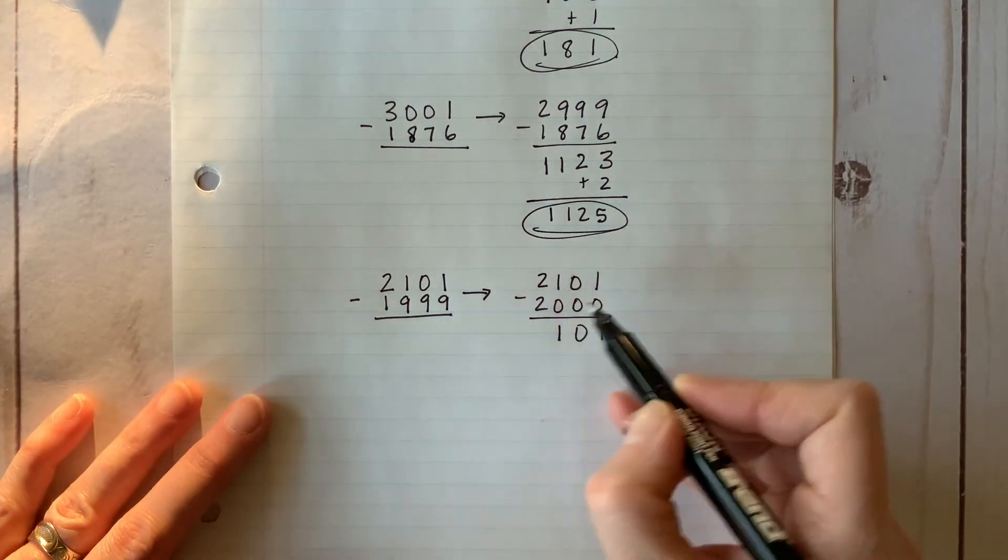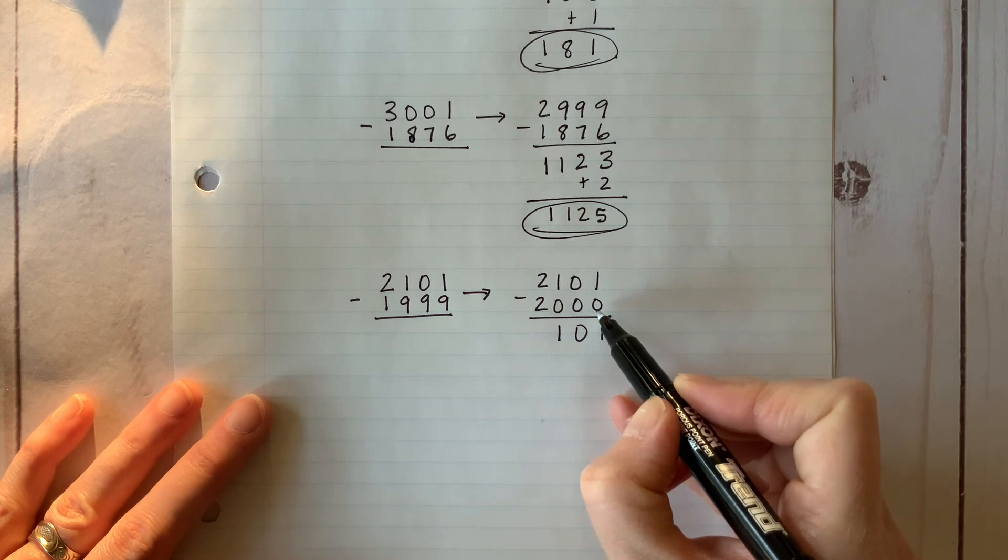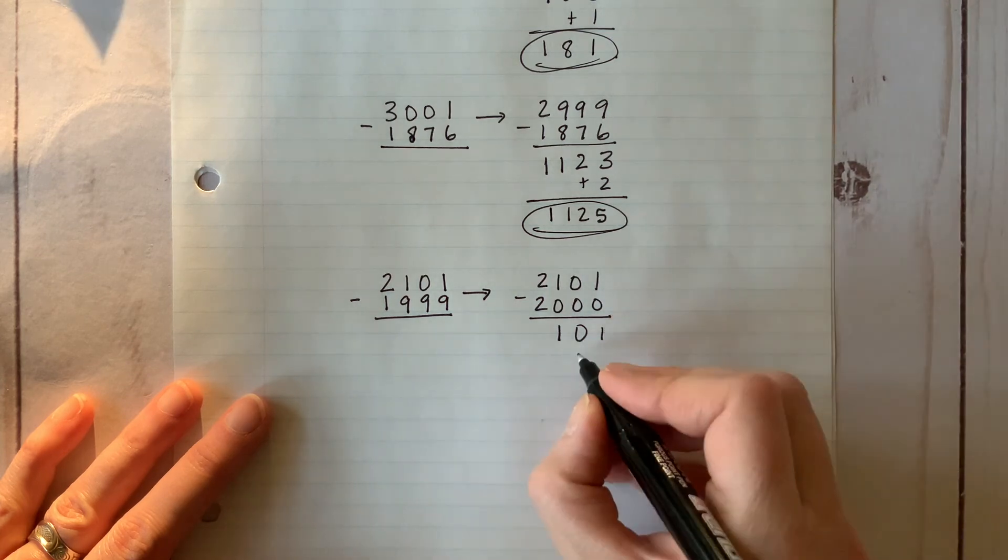How do we compensate now? Well, again, the difference between the two numbers is smaller than it should be. But if I add one, everything is back in balance.